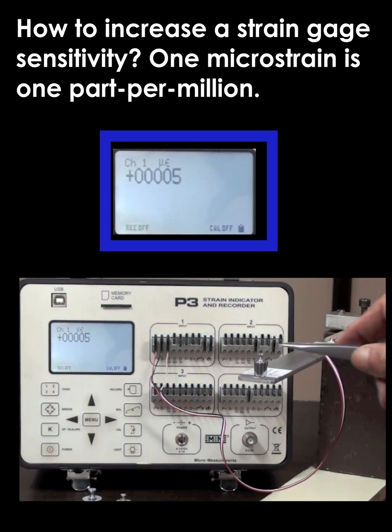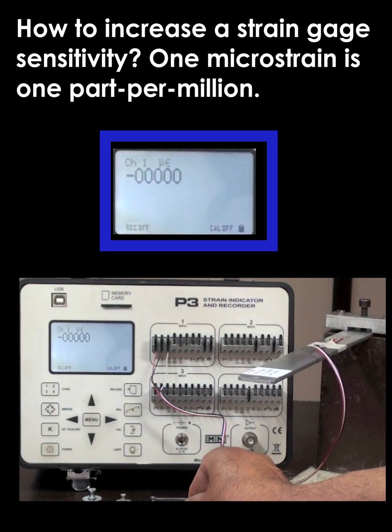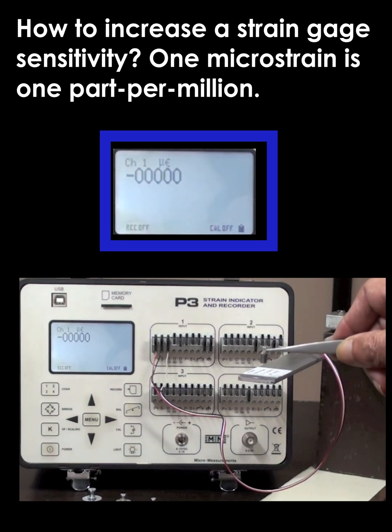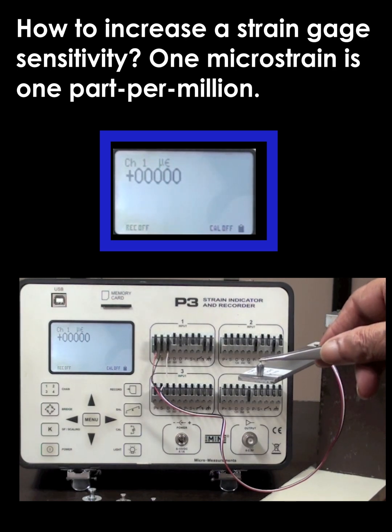A five gram weight should generate somewhere between two and a half to three microstrain, and you can see that the units are flashing between that. Then we've got a little one gram weight, and that's going to generate about half a microstrain, which is really below the resolution of the box with its current setup.